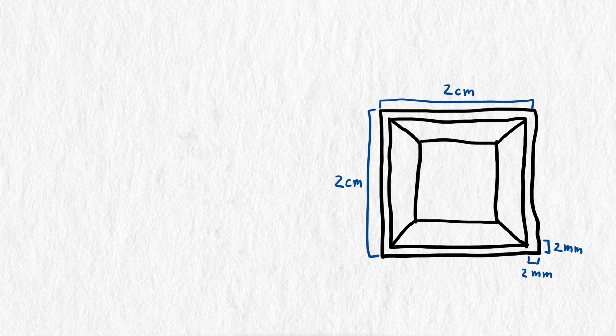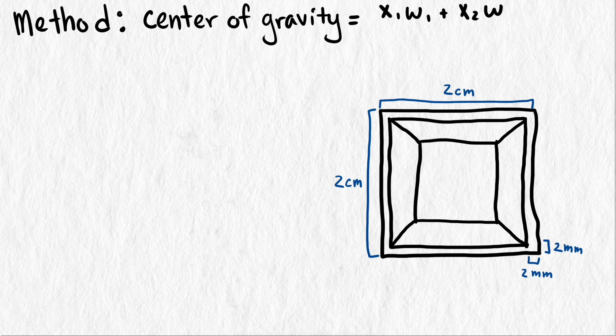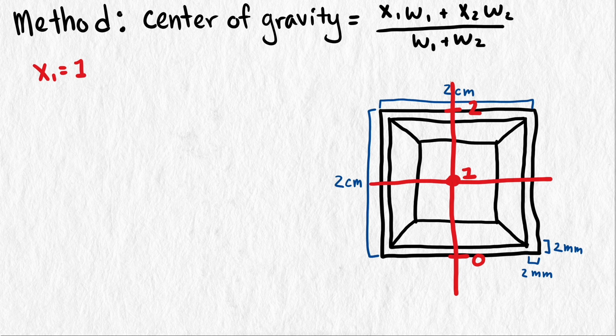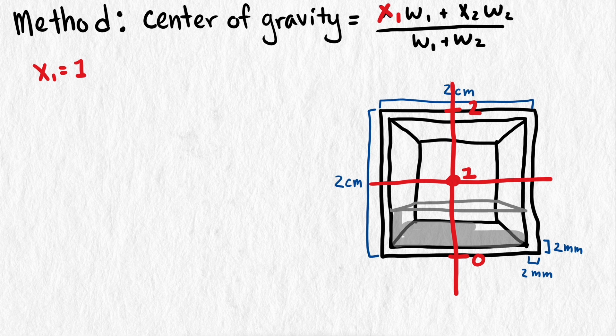We now have a method for finding the center of gravity of our loaded die, if we have coordinates for the centers. Let's put a scale on this line, since this is the line that the center of gravity will always lie upon. We will make 0 on this line the bottom of the die, and 1 would be in the very middle, 2 would be at the top. The coordinate of the centroid of the empty shell is at 1. The coordinate of the centroid of the filling depends on the height of the filling.